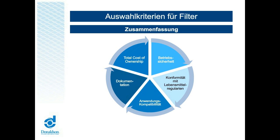Eine weitere Frage zielt auf VPHP ab: Wofür steht VPHP bzw. H2O2 und wie funktioniert das? H2O2 ist die chemische Formel für Wasserstoffperoxid und VPHP steht für Vaporphase Hydrogenperoxid, also Dampfphasenwasserstoffperoxid. Die Anlage wird nicht wie konventionell mit Sattdampf geflutet, sondern mit Heißluft, die mit Wasserstoffperoxid versetzt ist. Dieses bildet ein sehr aggressives Gemisch, das auch gegen Sporen wirksam ist.